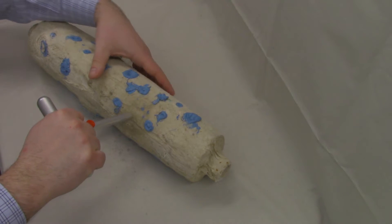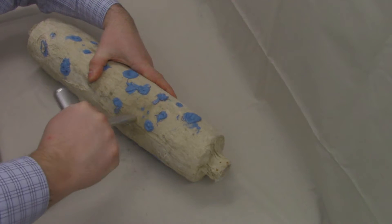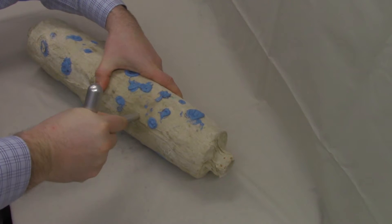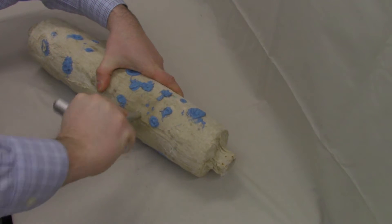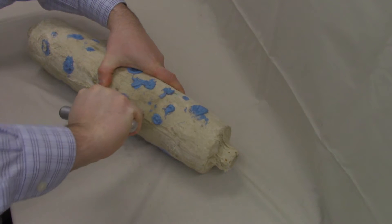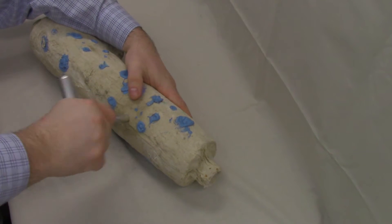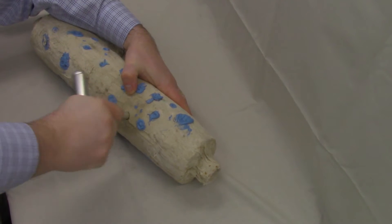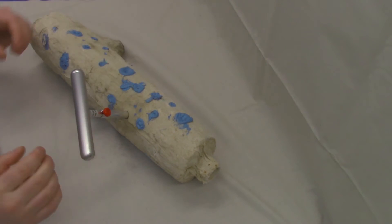Then we're going to take our cutter sleeve and rotate so hopefully you can see this a little better. And we're going to twist it back and forth while applying pressure in order to get through that canvas wrapping. Once we're through the canvas wrapping, I don't know if you can see that on the video very well, it slides much easier through the actual insulation material.